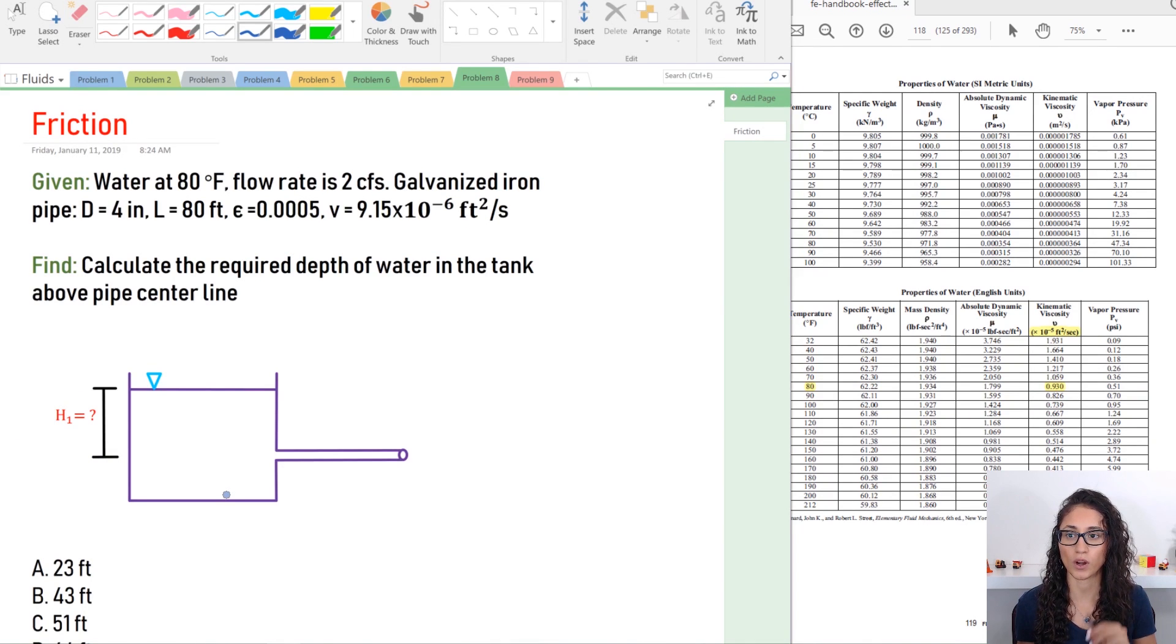Here's what we're given: Water is at 80 degrees Fahrenheit, flow rate is 2 cubic feet per second, we have a galvanized iron pipe with diameter of 4 inches, length is 80 feet, epsilon is 0.0005, and the kinematic viscosity is 9.15 times 10 to the power of minus 6 feet squared per second. We need to calculate the required depth of the water in the tank above the pipe centerline, which means this height from here to the center of the pipeline.